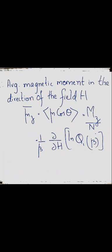The average magnetic moment in the direction of field H is mu_z_bar = <mu*cos(theta)> = m_z / N. Using the partition function relation already derived: mu_z_bar = (1/beta) * (∂/∂H) * log(Q_1(beta)).